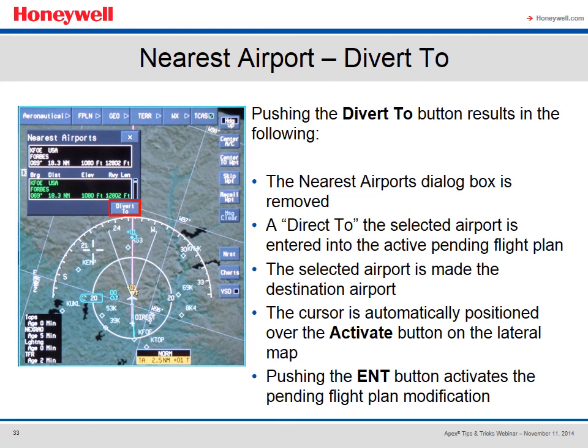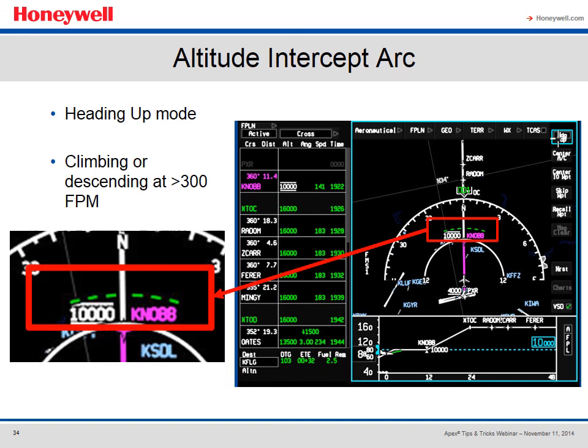In an emergency, the nearest airport is just a button push away. Pressing the Nearest button brings up the nearest airports dialog box showing bearing, distance, altitude, and runway length. Pressing DIVERT enters the airport as the destination, clearing any other waypoints. One of my favorites is the altitude intercept arc — when you put an altitude in the altitude pre-selector, the arc shows where you will reach that altitude. It's great for adjusting your rate of climb or descent, and in an engine-out situation it shows your gliding distance and aids in selecting a landing runway.